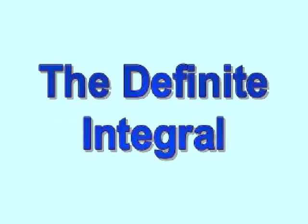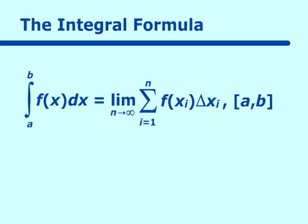The definite integral is our lesson for today. We are going to relate how we work with RAM — the Rectangular Approximation Method of finding the area under a curve — to a new formula, which is the integral formula. The integral formula is read as the integral from a to b of f of x dx, and that is equal to the limit as n approaches infinity of the sum from i equals 1 to n of f of x sub i delta x sub i over the interval a to b.